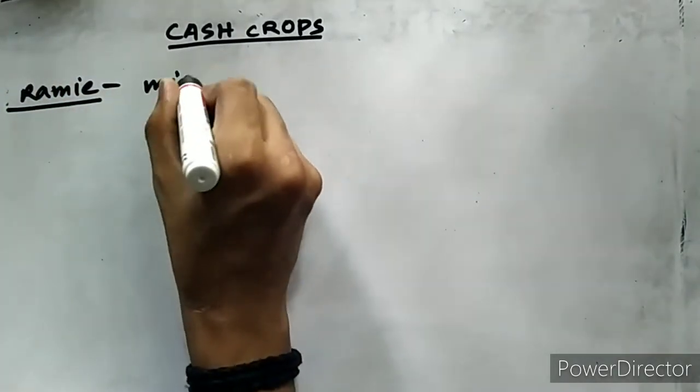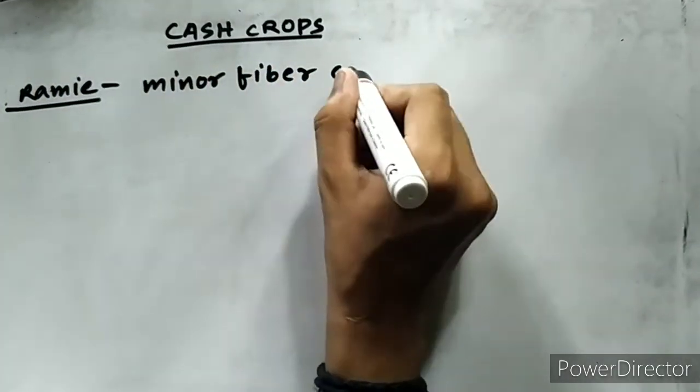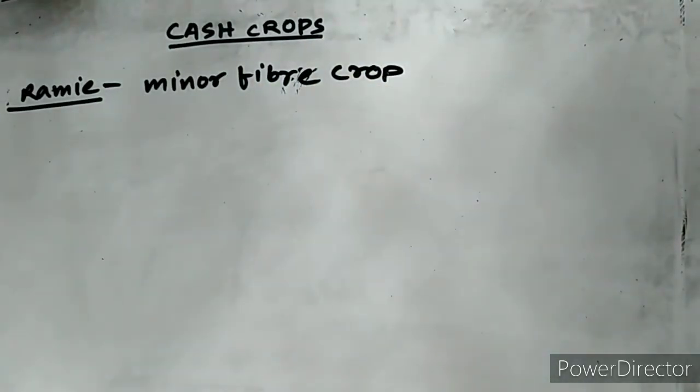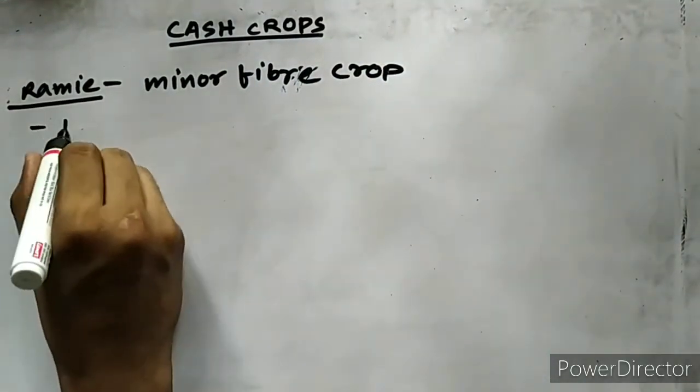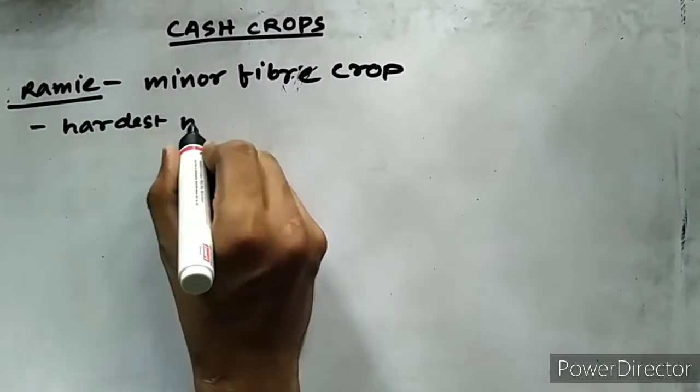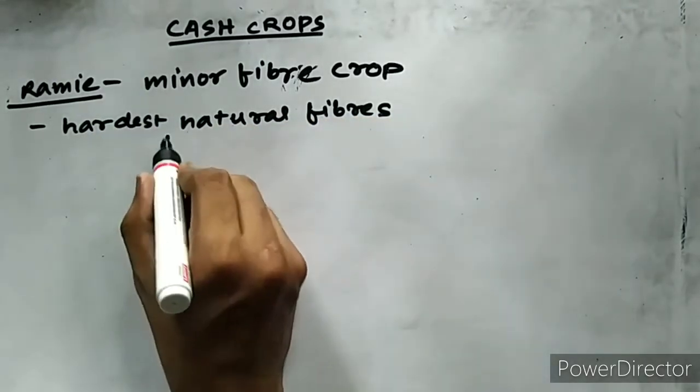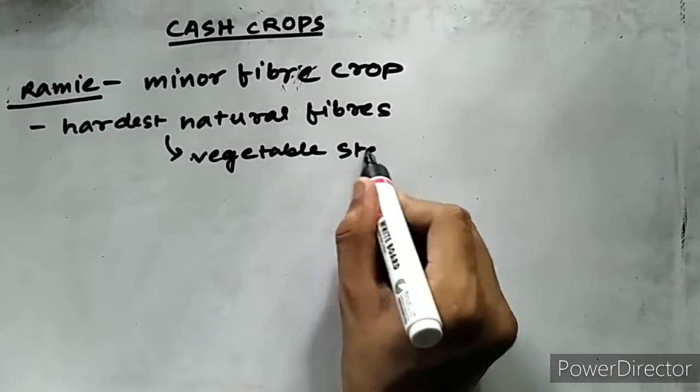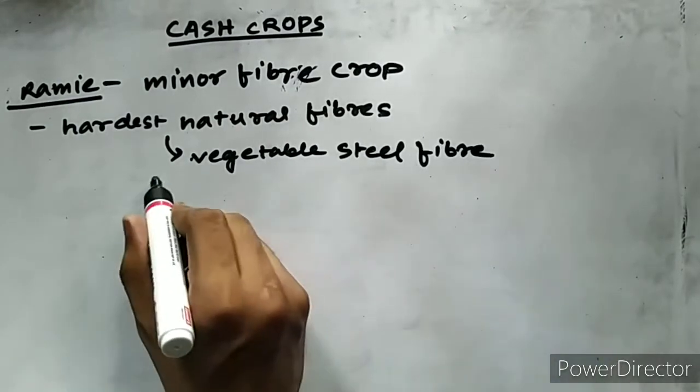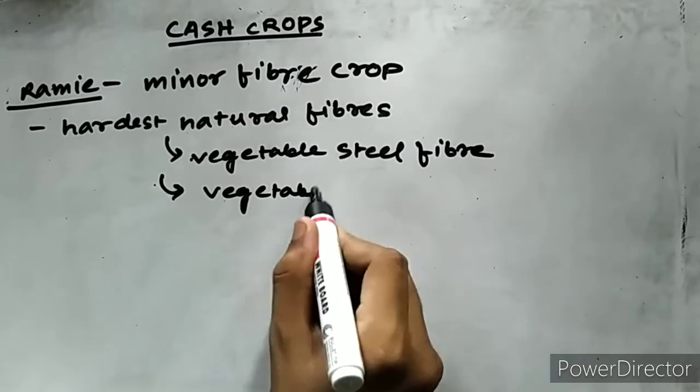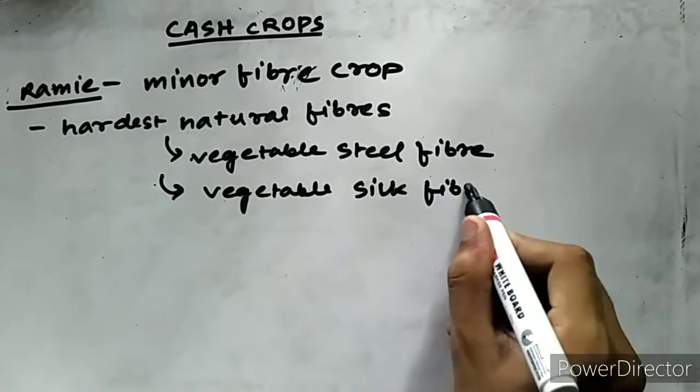Let us come to ramie. Ramie is similar to jute, which is also a fiber crop, and it is a minor crop in Assam. It is said that ramie is the hardest of the natural fibers and is also known as the vegetable steel fiber or vegetable silk fiber.